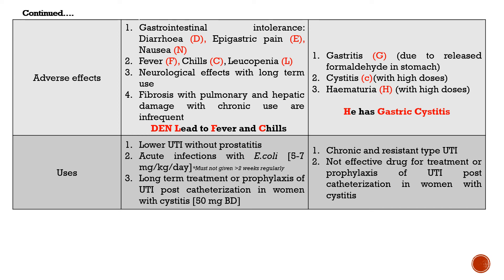Talking about uses, it is important to know that lower UTI without prostatitis can be cured by Nitrofurantoin. Acute infections with E. coli can be treated at a dose of 5 to 7 mg per kg per day, but only after prescription from a doctor. Long-term prophylaxis of UTI post-catheterization in women with cystitis can also be treated. Methenamine is not effective for prophylaxis of UTI post-catheterization, but it is effective for treating chronic and resistant-type urinary tract infections.